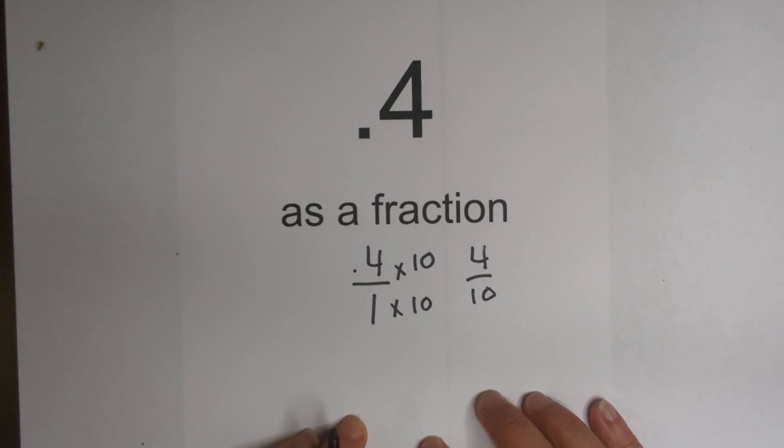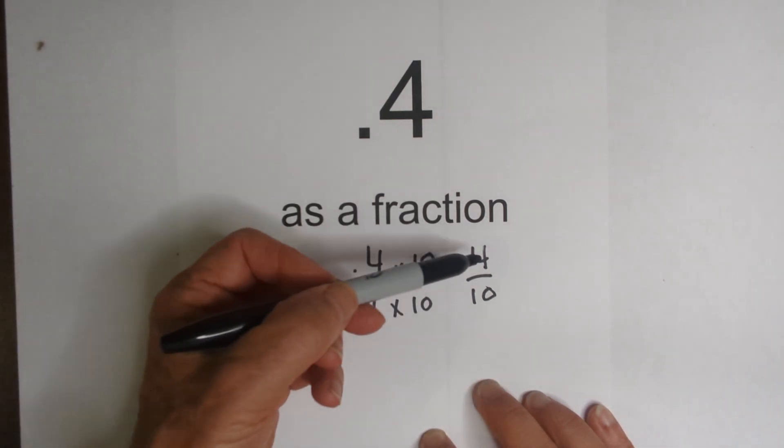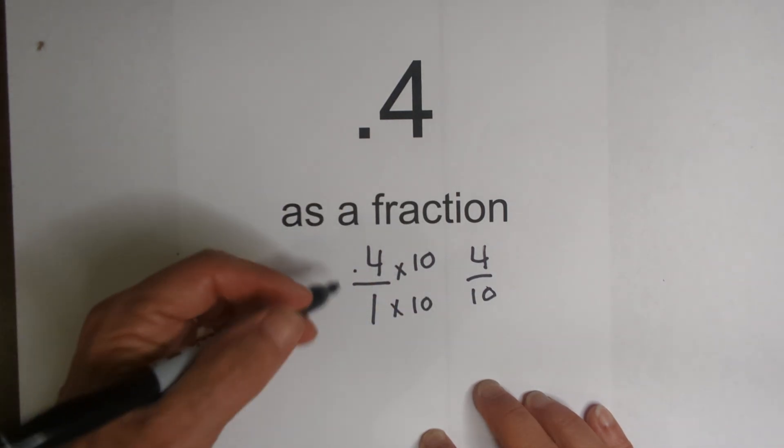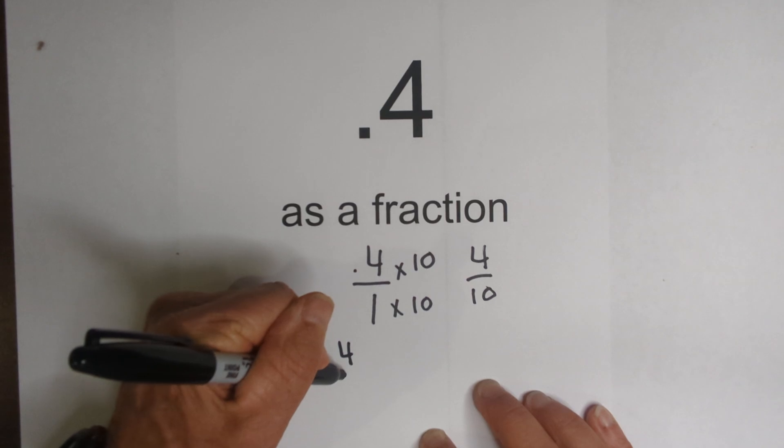Now we can simplify by finding the greatest common factor. Well, the greatest common factor of 4 and 10 is 2. If you don't know how to do that, you can set up a factor tree.